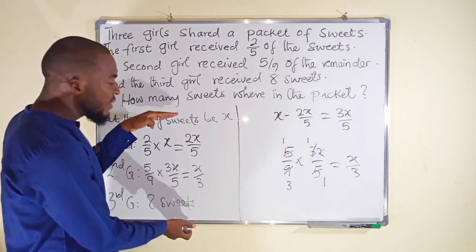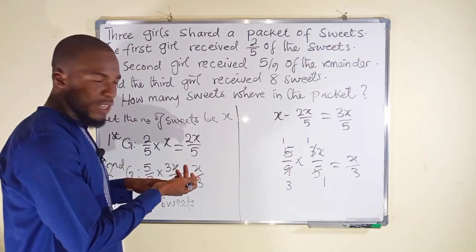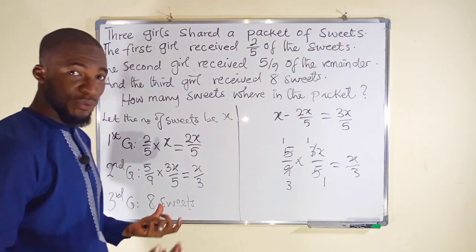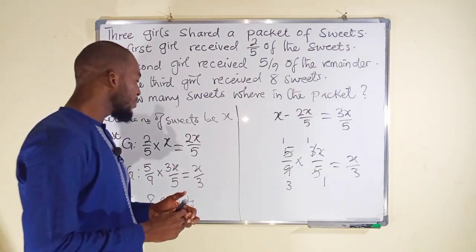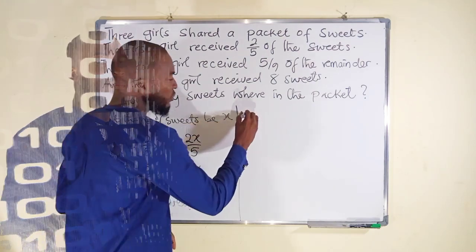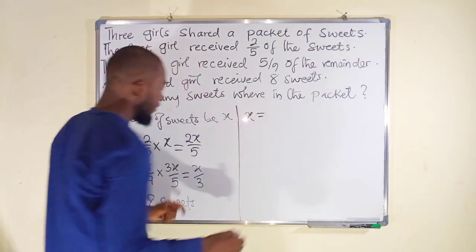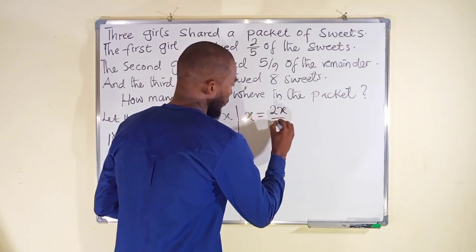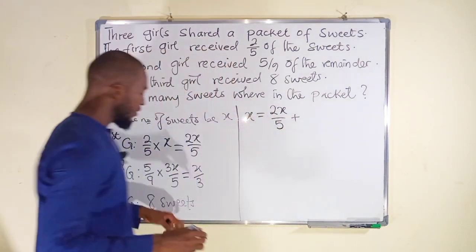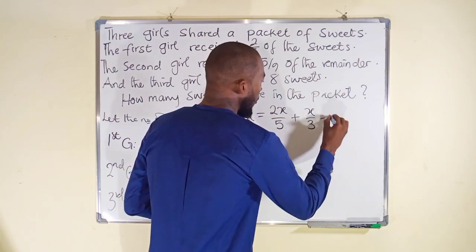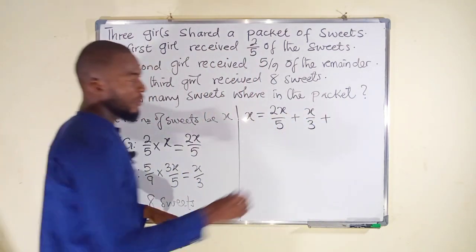But once you can add all these three shares together, you must obtain x because x has been declared to be the total number of sweets. So let us add all of them together and equate them to be equal to x. The total sweet which is x must be equal to the first share which is 2x over 5, plus the second share which is x over 3, plus the third share which is eight sweets.